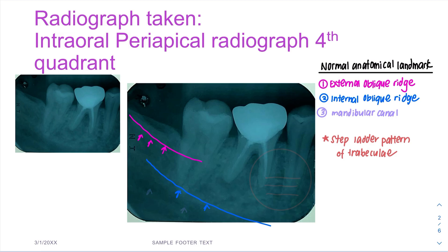We can appreciate the mandibular canal here — the radiolucent line. We can also appreciate the step ladder pattern here. This is a trabecular plate that is arranged in a horizontal manner.